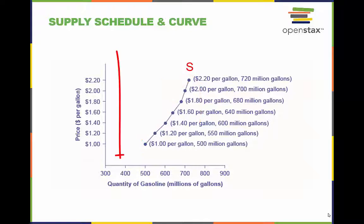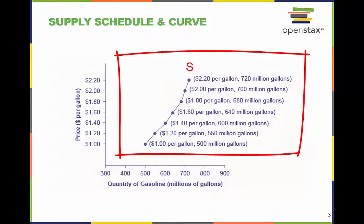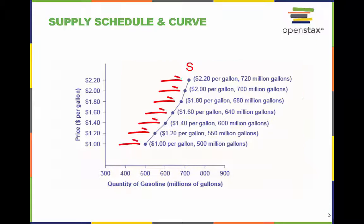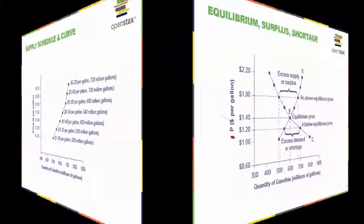Just like demand, it is important to note that in general, supply refers to the entire supply schedule and curve, and that quantity supplied refers to the individual points on the curve or individual price and quantity sets in the schedule.